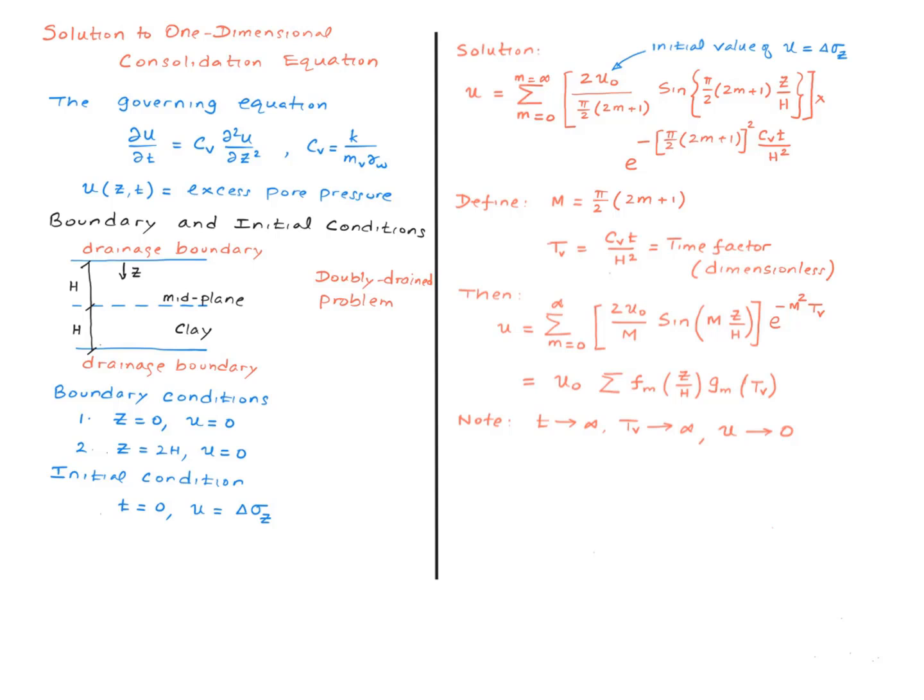Then we have two key functions here. There is a sine function. There is an exponential function. The sine function is the function of z, and the exponential function is the function of little t, time.